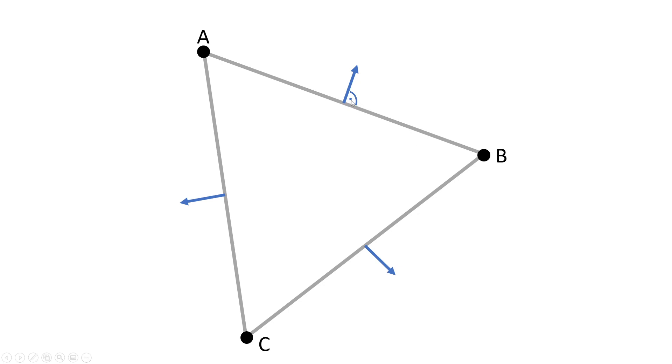And then we need to call the get normal method we did earlier. And then we can get these normal directions which are pointing out of the triangle.